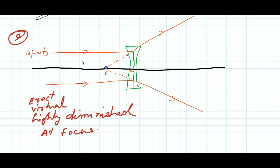These are the two conditions of image formation with the help of a concave lens. As the object shifts from the optical center toward infinity, the image shifts toward focus F. I will also show one more condition: when the object is placed between F and C, you should also know how the image is formed with a concave lens in that case, so I am drawing another ray diagram for it.